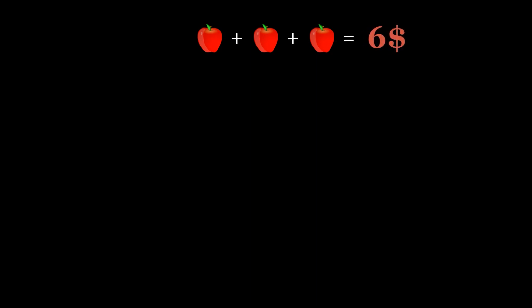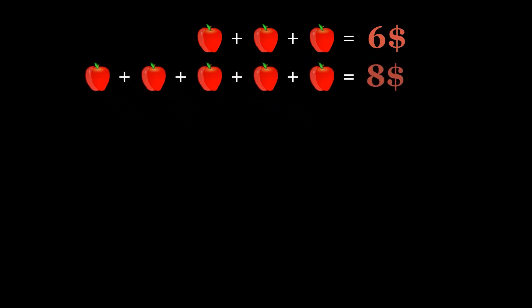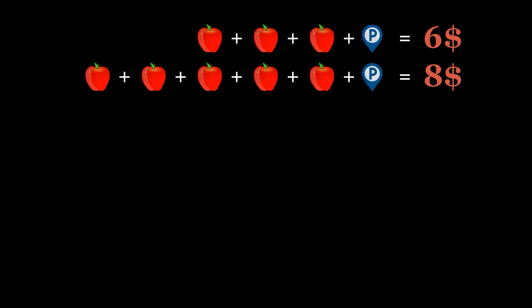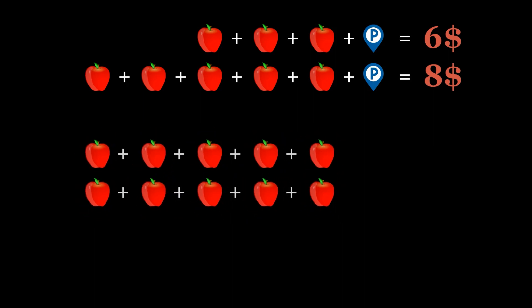Suppose on your first trip to the supermarket you purchased three apples and your overall expense was six dollars. On your second trip you purchased five apples and it cost you eight dollars. Note that the total expense also includes parking charges, which are the same in both cases. Now if you have to go to the supermarket to buy ten apples, how much will it cost you? Before going further, please think for a moment and try to solve this.